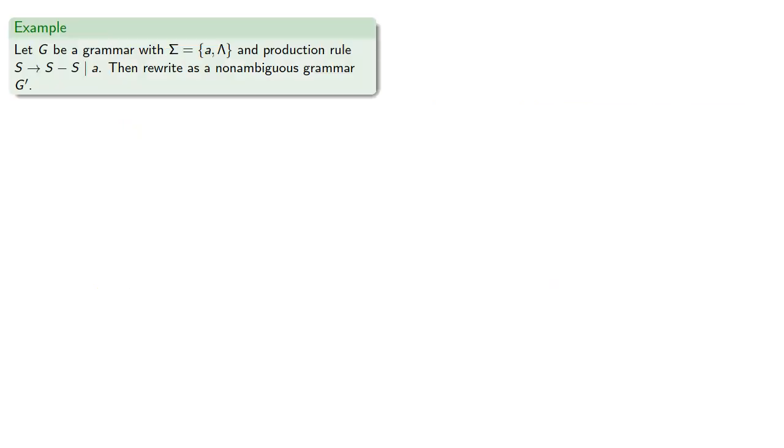For example, suppose we have a grammar with these terminals and this production rule, and let's see if we can rewrite it as a nonambiguous grammar. This grammar is ambiguous because there are two ways we might derive an expression like a minus a minus a.